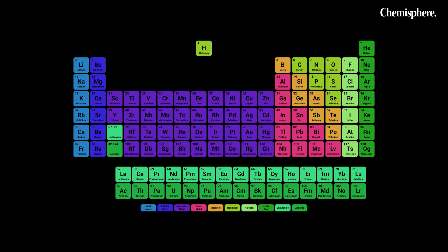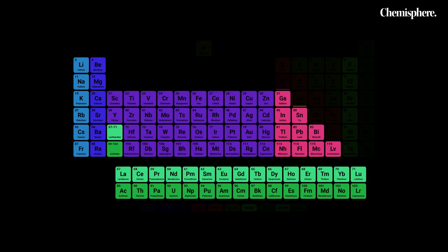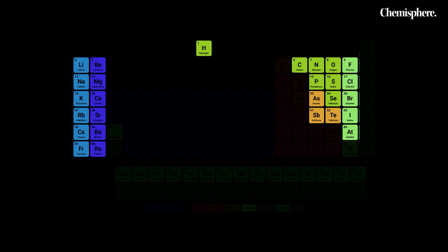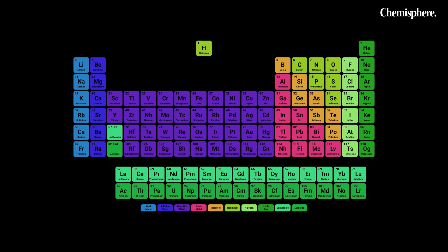The determination of block, period and group is really important because we need to know just by the atomic number what kind of nature the element has. For example, is it a non-metal, a metal, or a metalloid? Apart from that, a lot of basic info — like if the element is very reactive or unreactive — can be easily found by just noting the period number, the block number and the group number. This is done by following certain steps. Now let's discuss all of these steps one by one.